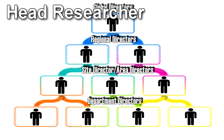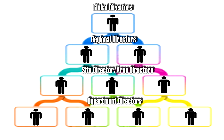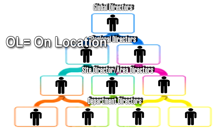Head Researcher: The head researcher is in charge of a specific subdivision or office — such as bioscience, medical, etc. — within a site. Their responsibilities include setting the goals and policies within their area of work, approving containment protocols, and coordinating with other subdivisions and departments. Often, head researchers are assigned oversight of nearby related OL sites as part of their operational duties.